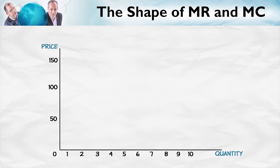Let's put this in a diagram, beginning with marginal revenue. For a competitive firm, this is easy — because the firm is small relative to the total market, it can double its production without pushing down the market price. As a result, marginal revenue equals the market price. Whether the firm produces a third, fourth, or fifth unit, the addition to revenue is always the price. So marginal revenue for a competitive firm equals the price and is flat.